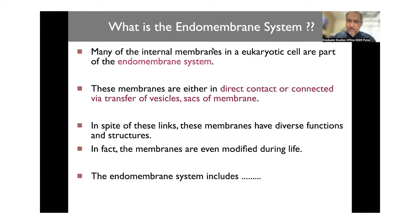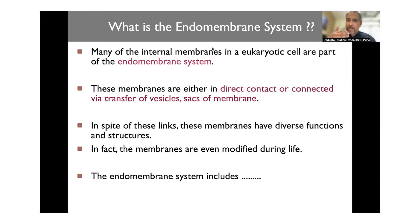We briefly talked about how the endomembrane system is put together and how vesicles are transported from one compartment to the other. We also spoke about the fact that the composition and processing capability of each component could be different. When we look at the Golgi, for example, there are different enzymes present in different Golgi compartments, and proteins can be modified as they make it through these compartments.